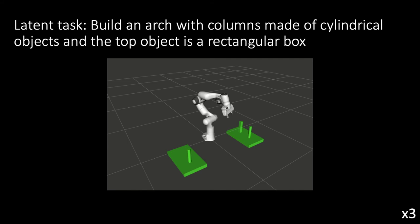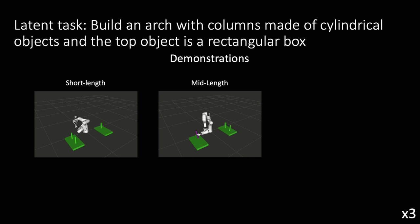We also apply to a manipulator. The latent task here is to build an arch with columns made of cylindrical objects on bottom and a rectangular box on top. We provided three different lengths of demonstrations that accomplished this task.